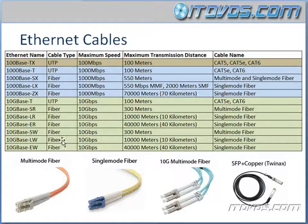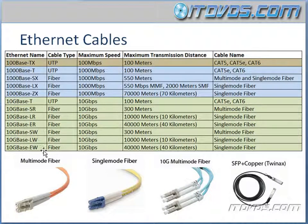And the rest of these are going to be fiber: 10GBaseSR, 10GBaseLR, 10GBaseER, 10GBaseSW, 10GBaseLW, and 10GBaseEW.